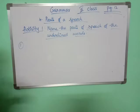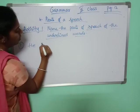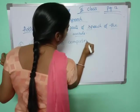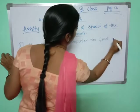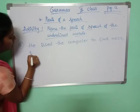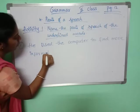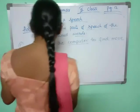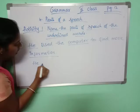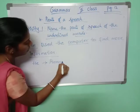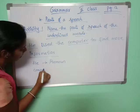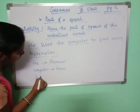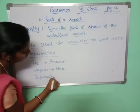First one: He used the computer to find more information. So here, what is underlined? 'He' is underlined, then 'computer' is underlined, then 'information' is underlined. So 'he' is a pronoun. Next, 'computer' is a noun. And 'information' is also a noun.